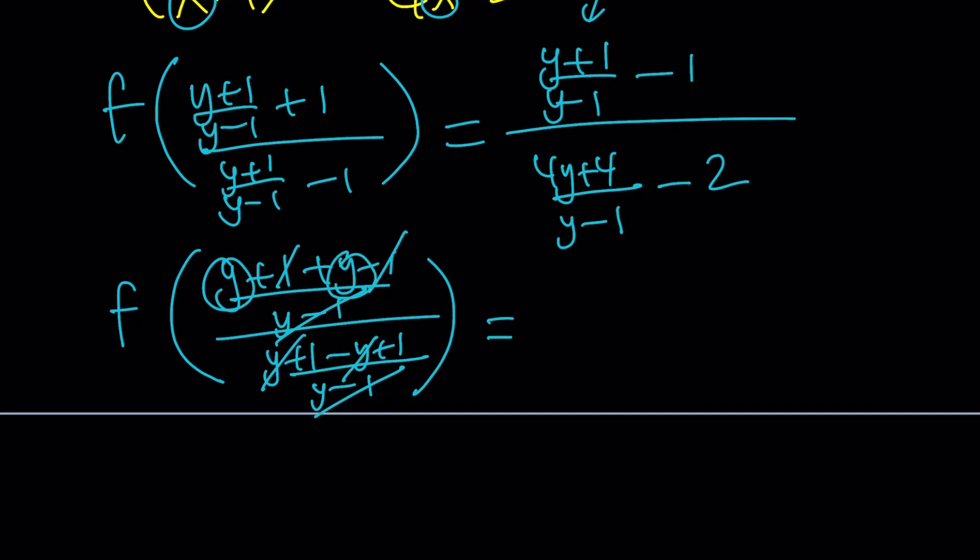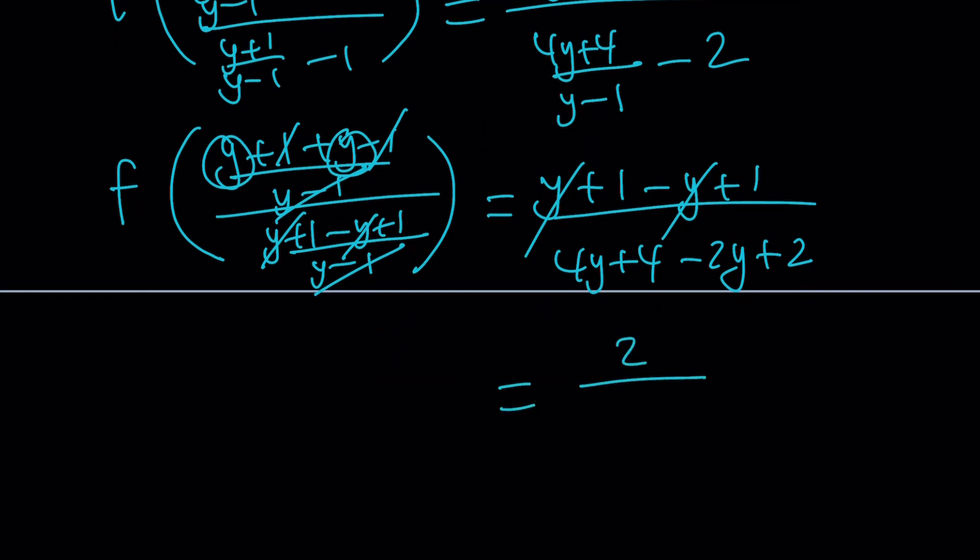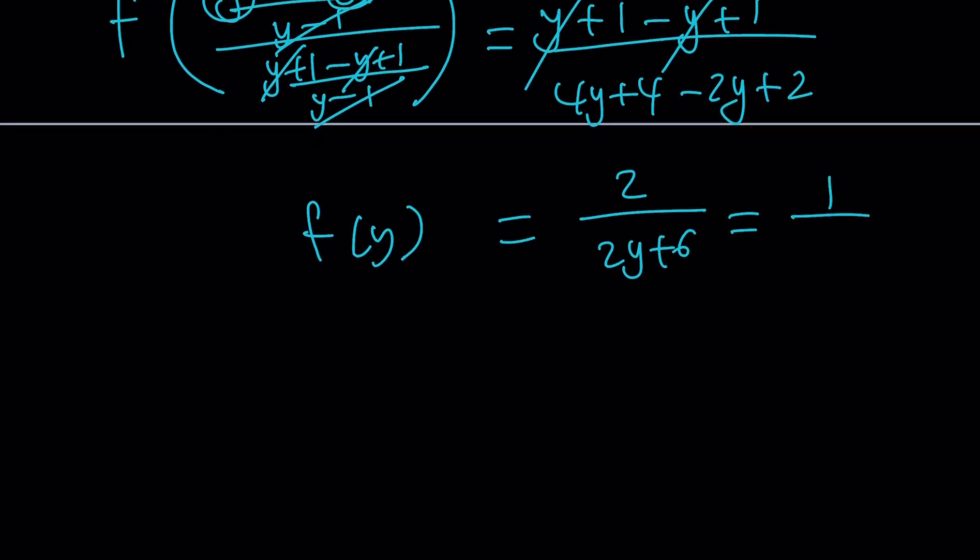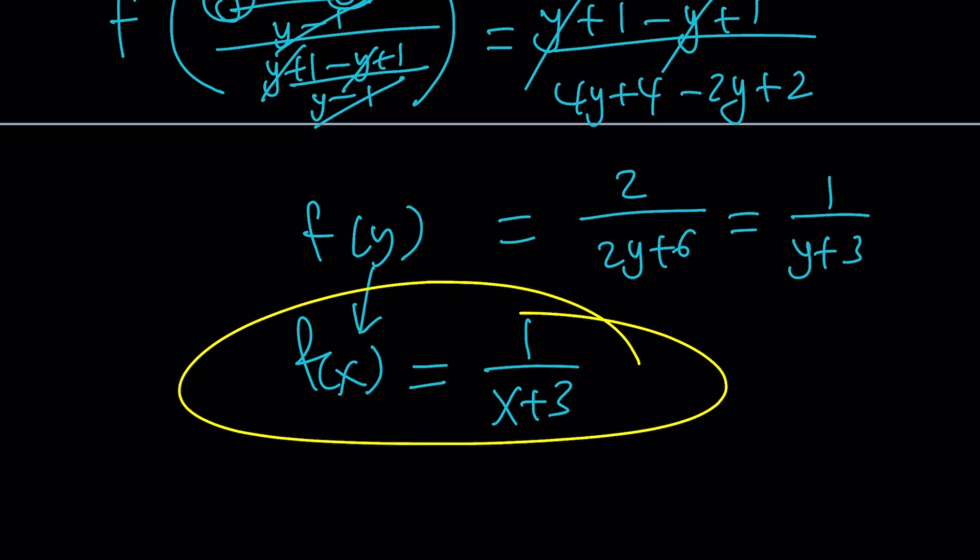And on the right hand side if you simplify the same way and forget about the denominators, because they're going to cancel out anyways, you're going to get 4y+4-2y+2. And from here you should be getting something like 2/(2y+6). And this is f of y. And of course this can be simplified and you can write it as 1/(y+3). But since f of y is in terms of y, f of x from here, just replace y with x, is going to be 1/(x+3). So f is a rational function that can be expressed like this. And this brings us to the end of the first method.